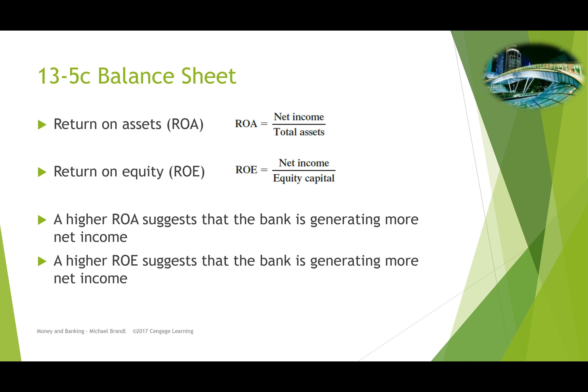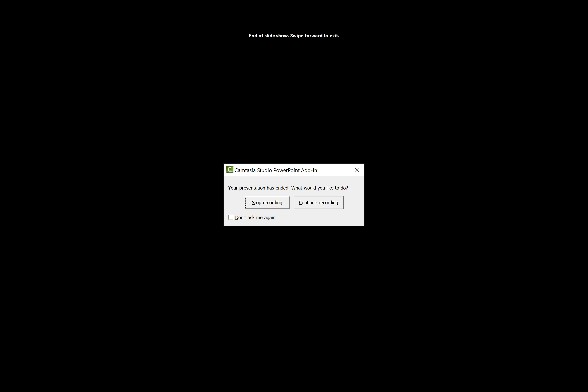When evaluating a bank's balance sheet performance, we look at return on assets (ROA) — net income divided by total assets. A higher ROA indicates the bank is generating more income from its assets, often when interest rates are rising. Return on equity (ROE) is net income divided by equity capital — the value of shares in the bank — and a higher ROE suggests the bank is generating more net income from its operations. These are two key ways of analyzing a bank's performance.